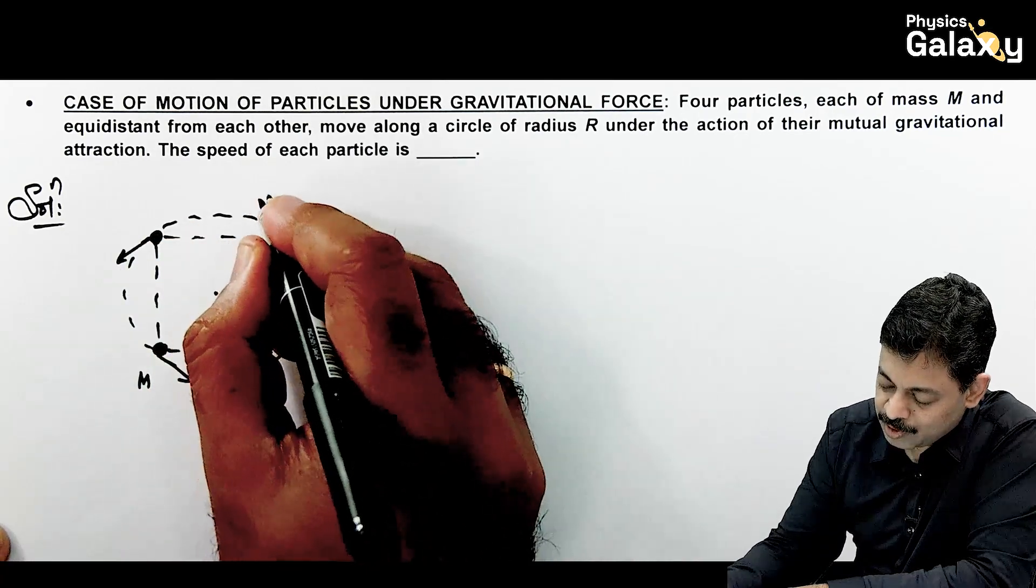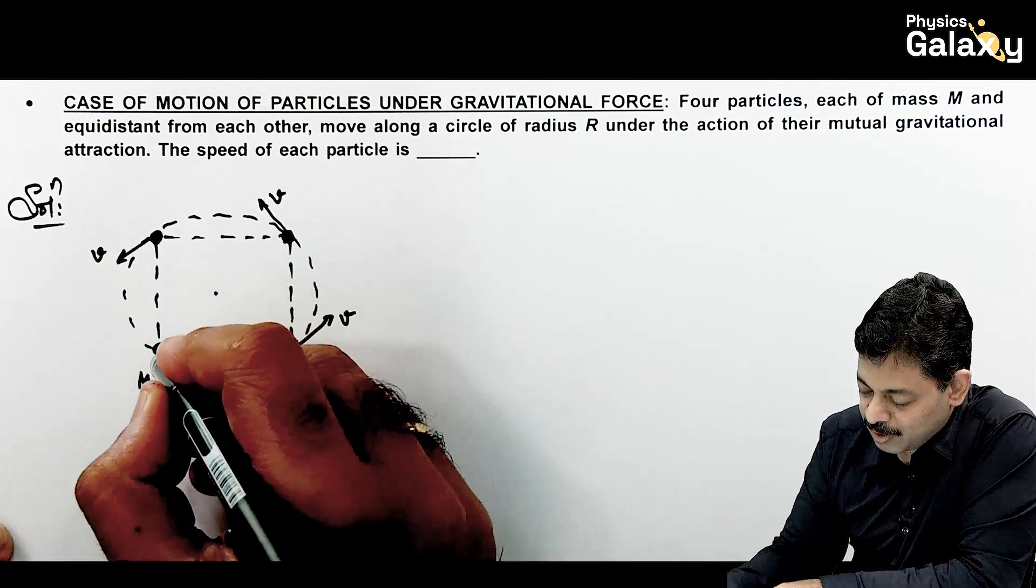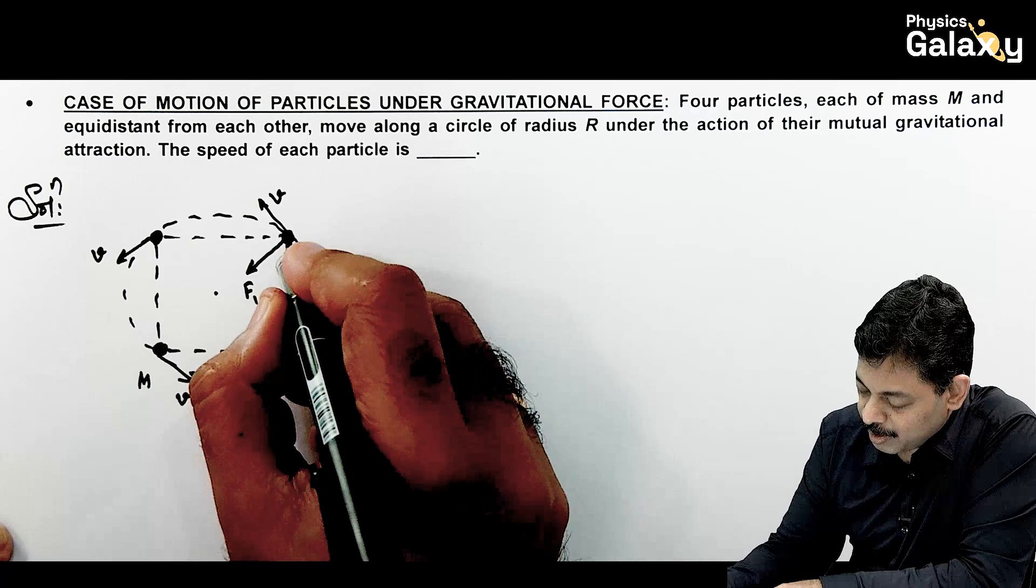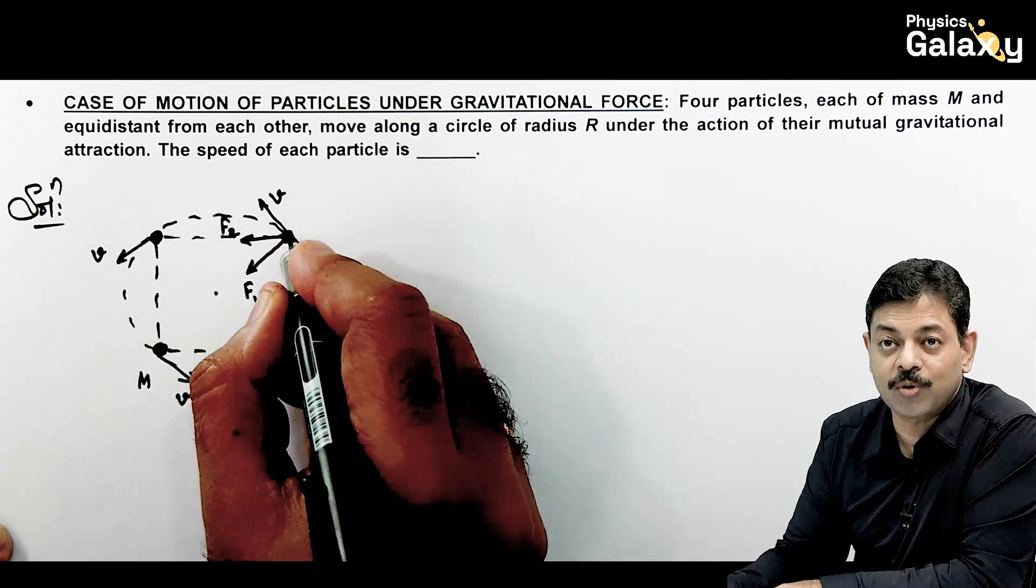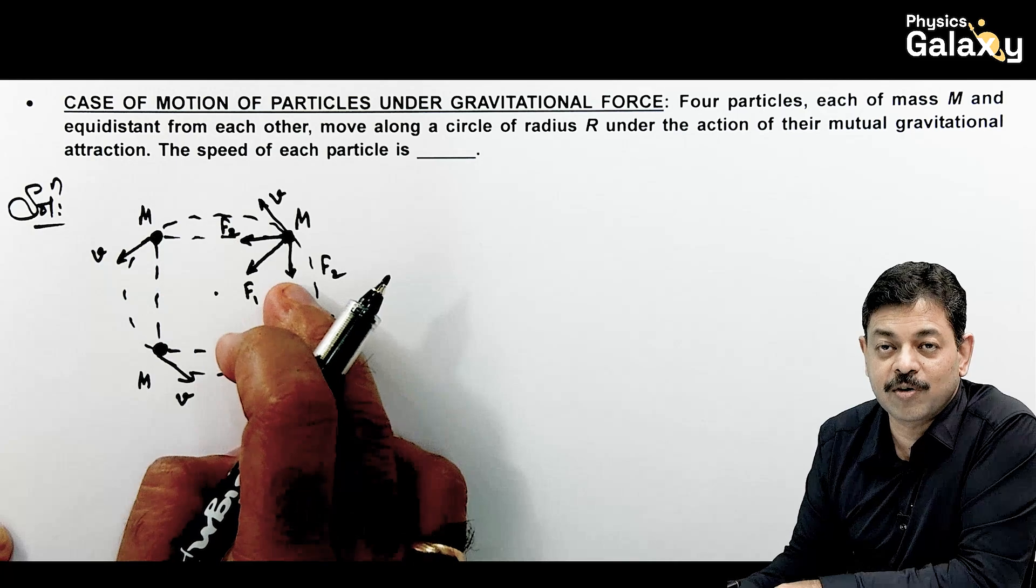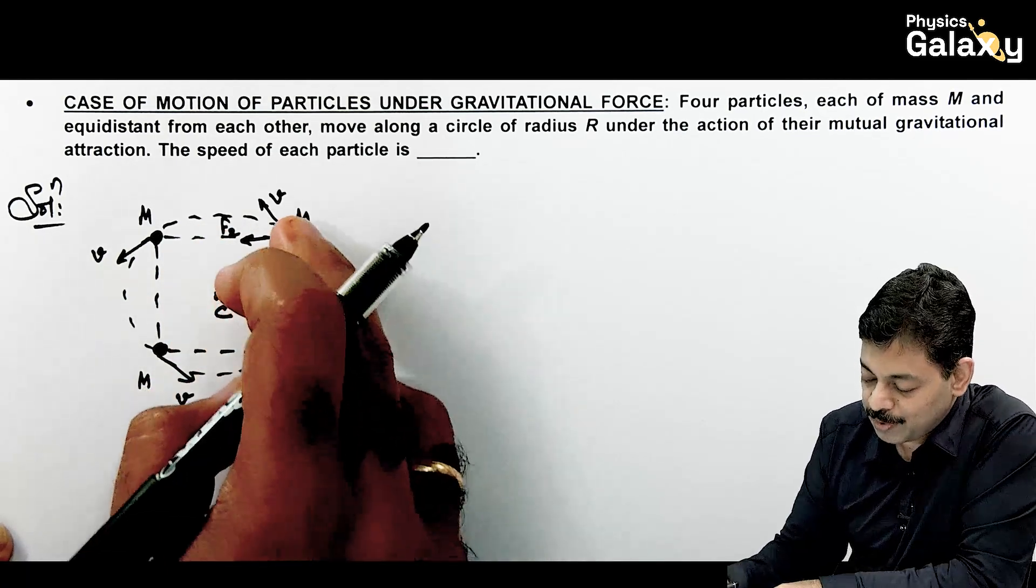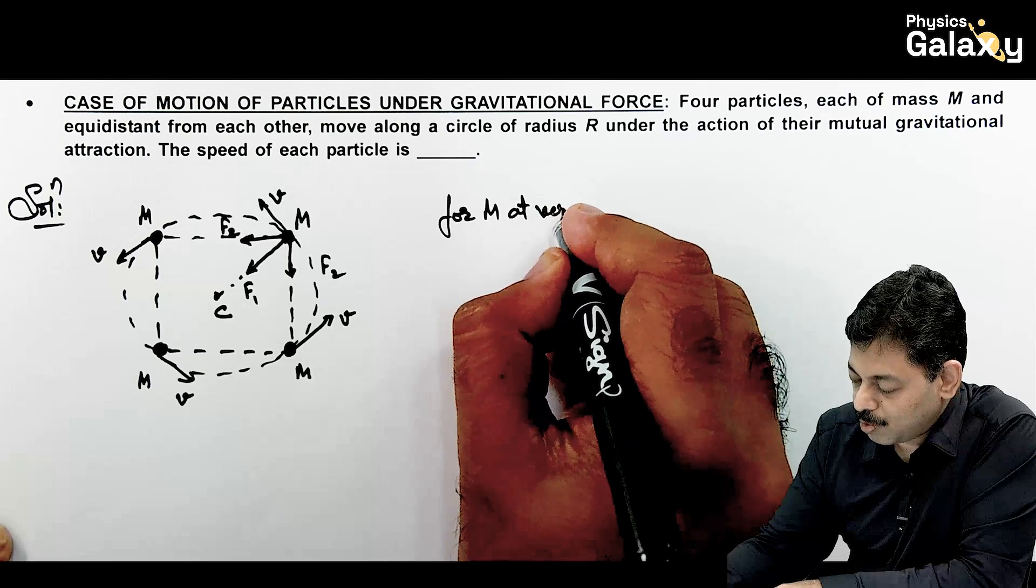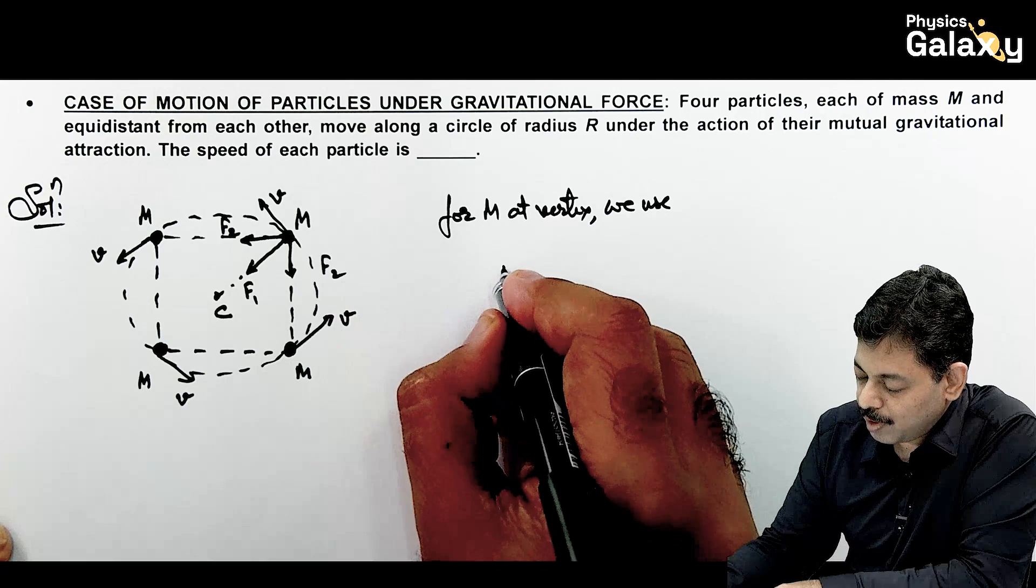And they are moving along a circle of radius R. That means only under gravitational interaction, if they are moving in circle, then the situation is like this: they are tangentially moving with the speed v. And here for circular motion, the centripetal force is provided by the gravitational interaction. So on any one particle we see, this particle will be exerting a force f1 onto it, other two particles will also be applying a force f2 and f2. These two will be equal forces f2 and f2 onto it.